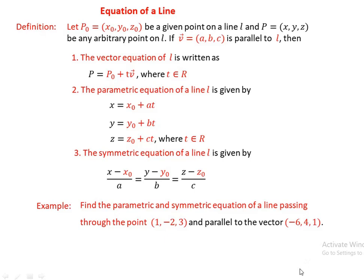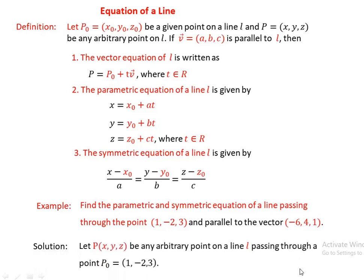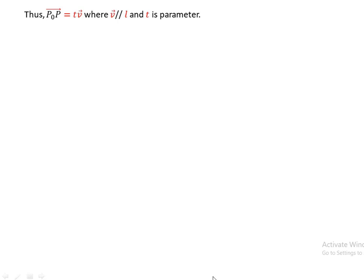Using the definition and the vector form, let P of (x, y, z) be any arbitrary point on line L passing through the point P-naught which is (1, -2, 3). Then we know that the directed vector P-naught P equals t times V, because vector V is parallel to the line L. What is P-naught P? Since P-naught is (1, -2, 3), we get P-naught P equals (x-1, y+2, z-3), and this equals t times V equals t times (-6, 4, 1).